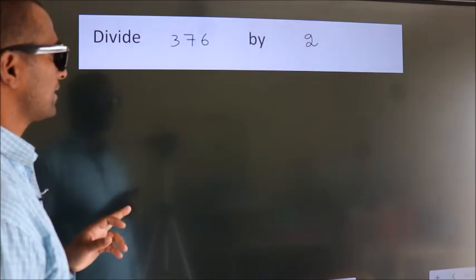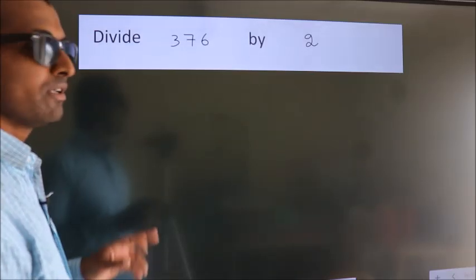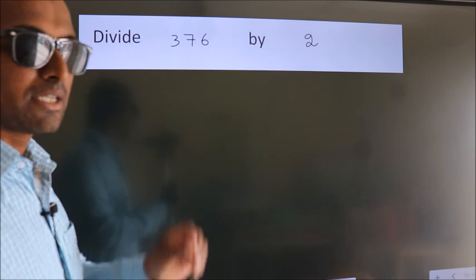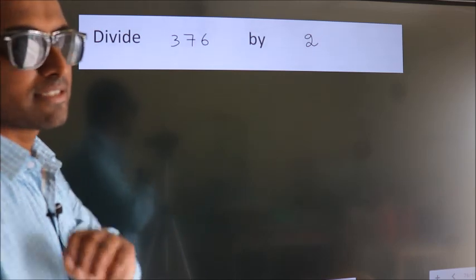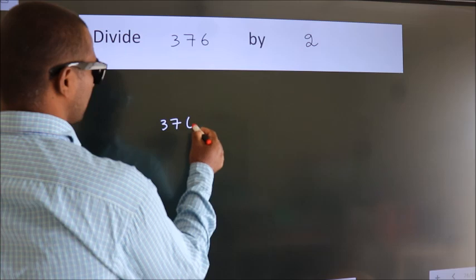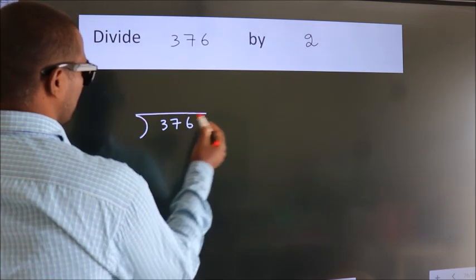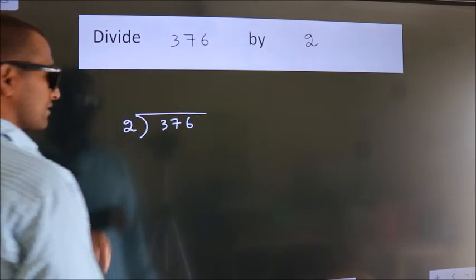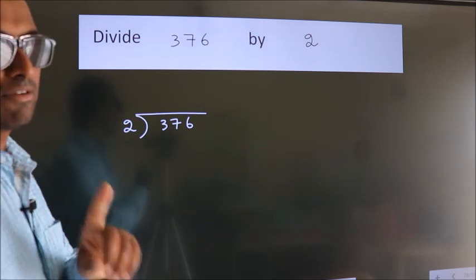Divide 376 by 2. To do this division, we should frame it in this way. 376 here, 2 here. This is your step 1.